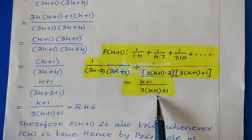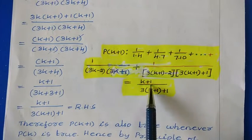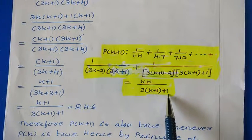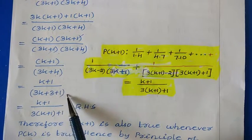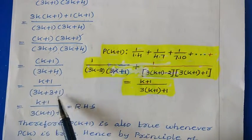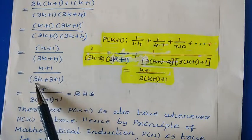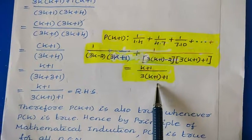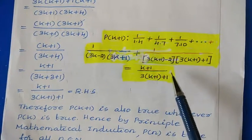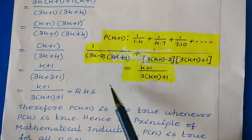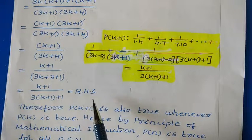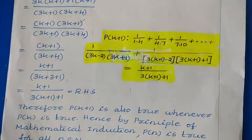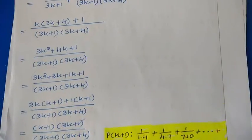Now (3k+1) cancels from numerator and denominator, giving (k+1)/(3k+4). Writing 4 as 3+1: 3k+3+1, and taking 3 out from 3k+3 gives 3(k+1)+1. So this is (k+1)/(3(k+1)+1), which is our RHS. We have reached the RHS, so P(k+1) is true whenever P(k) is true. Hence, by the Principle of Mathematical Induction, P(n) is true for all natural numbers.